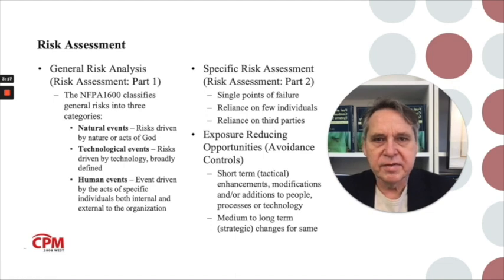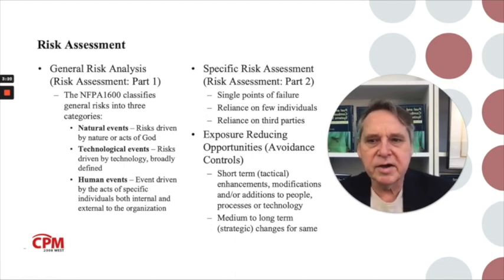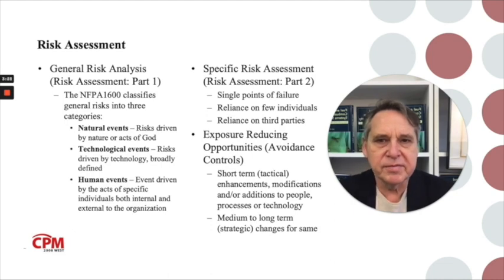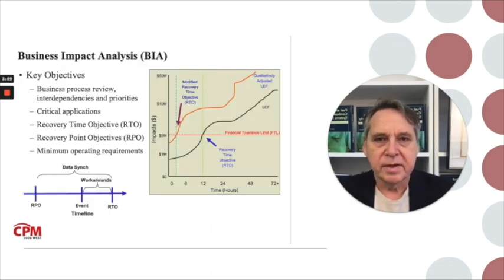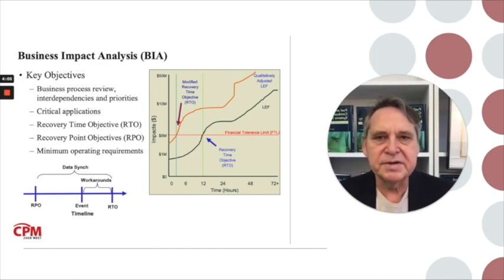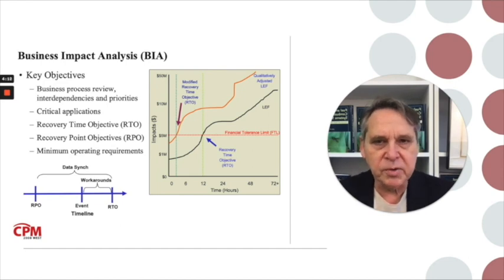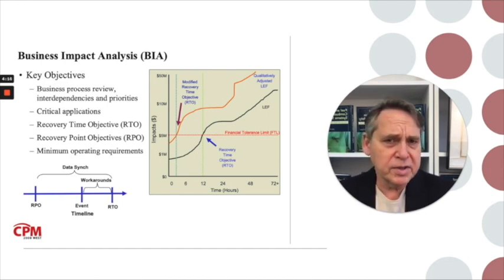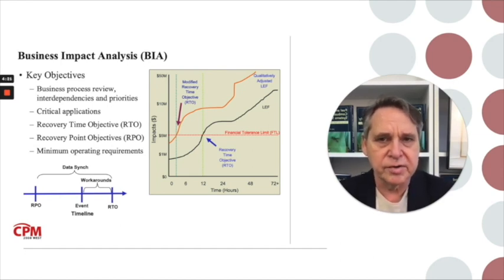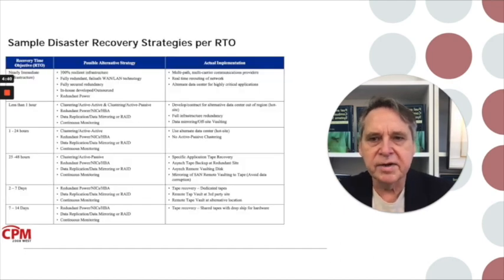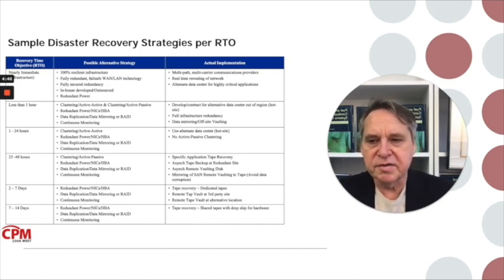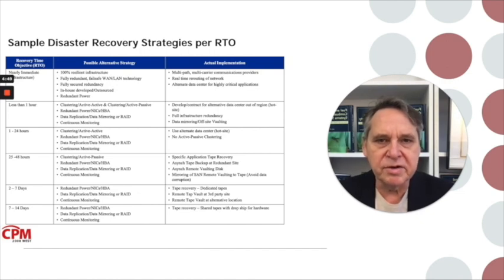In the analysis stage, they refer to NFPA 1600 and talk about doing risk assessments and the kinds of risks that might be out there. They look at doing a business impact analysis, talking about recovery time objectives, recovery point objectives, and minimum operating requirements — all really good stuff that I've thought about for the fuels and fired equipment impact that could occur. There's a table provided mostly for data, software, and technology-type recoveries, and you see it ends up with what could be a 7-to-14-day problem.